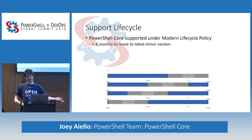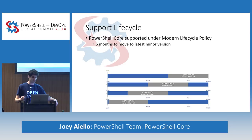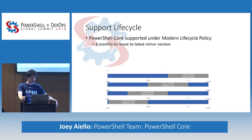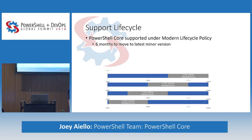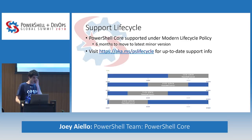PowerShell Core is supported under Microsoft's Modern Lifecycle Policy — an 'as-a-service' philosophical shift. When we move to a new minor version — 6.1, 6.2, 6.3 — you have six months to move to that minor version. You get about six months of overlap: we release 6.1, and by the time 6.1 is halfway through its life, we expect you'll have moved off 6.0, and maybe on to 6.2.